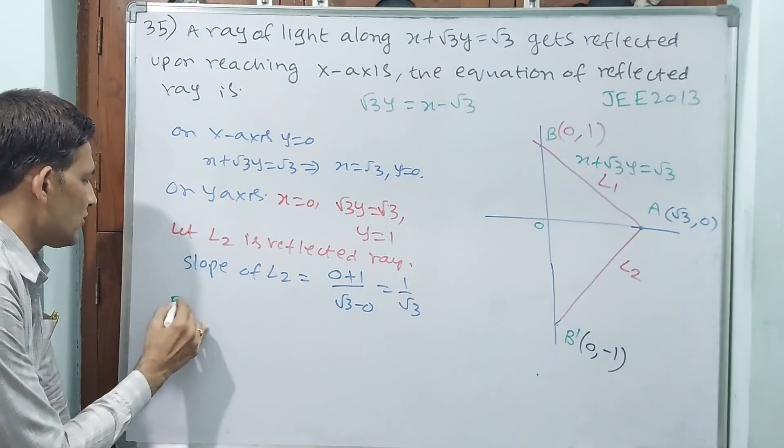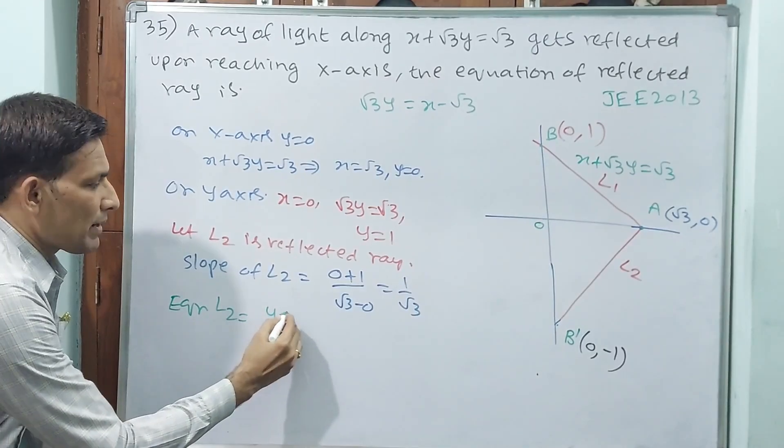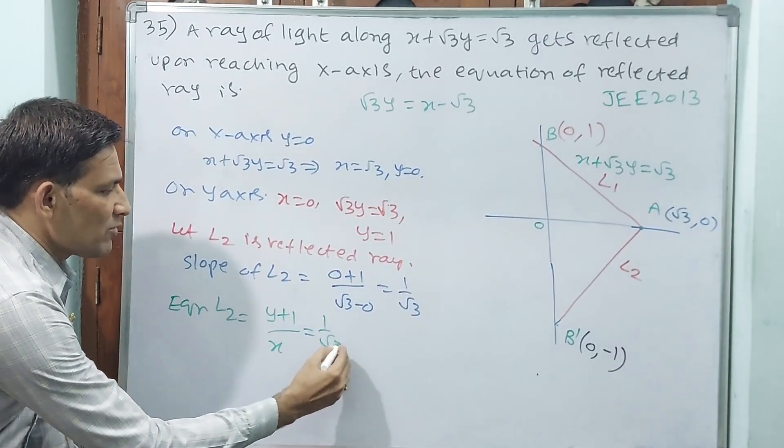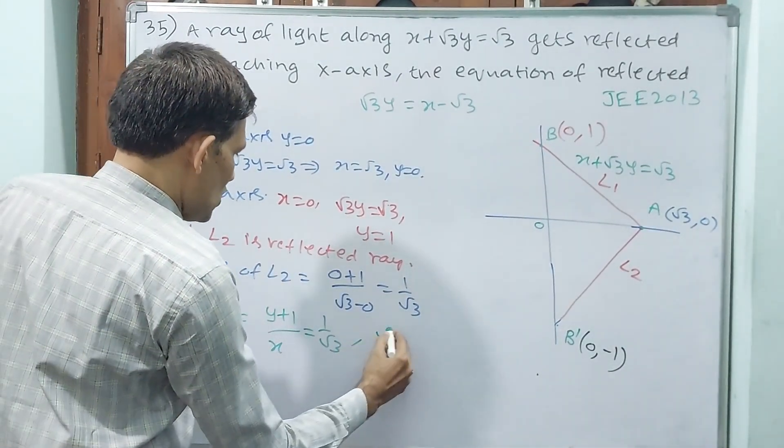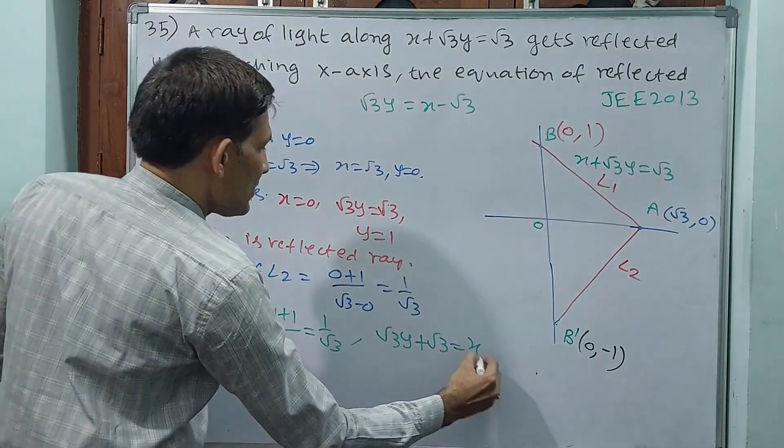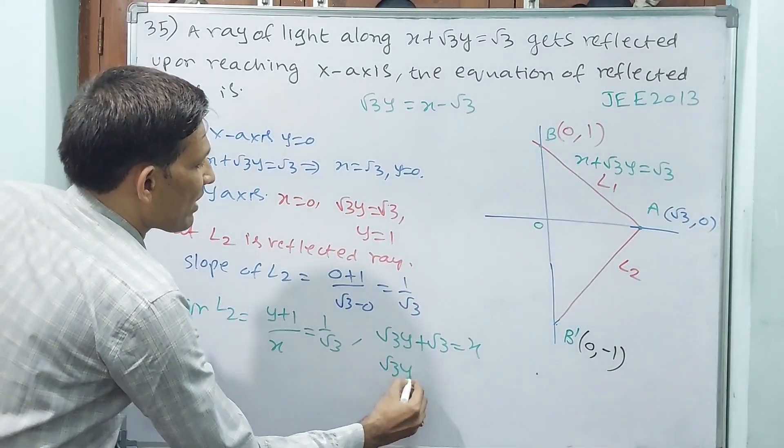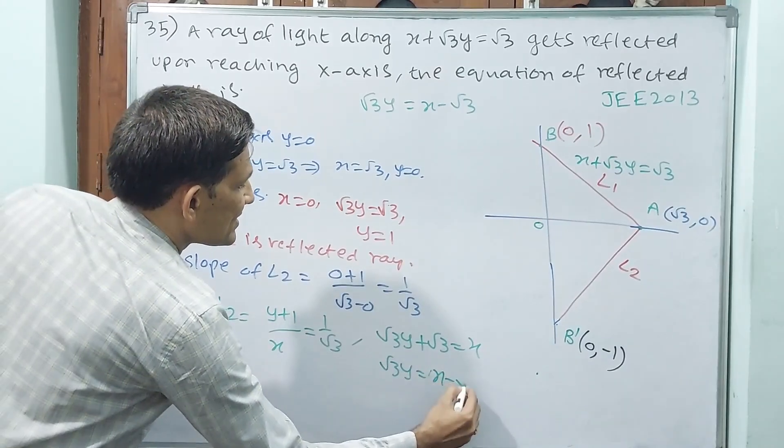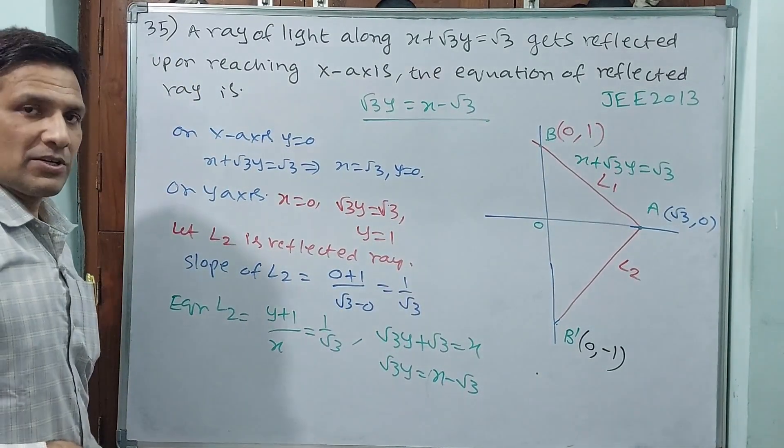Equation of L2: y plus 1 by x minus 0 equals 1 by root 3. Root 3 y plus root 3 equals x. Or root 3 y equals x minus root 3. Let's go to the next question.